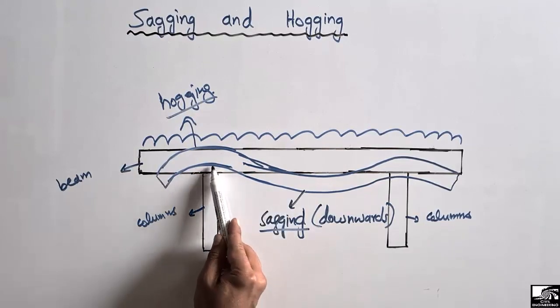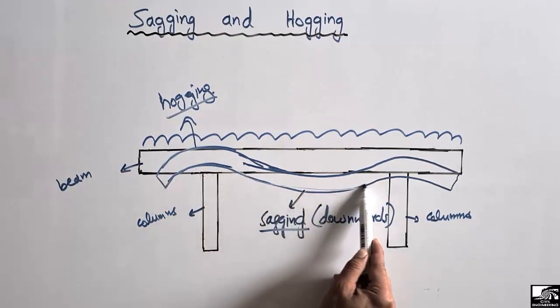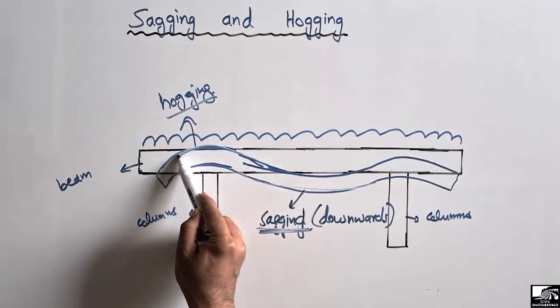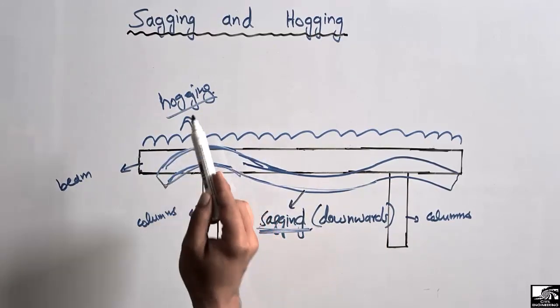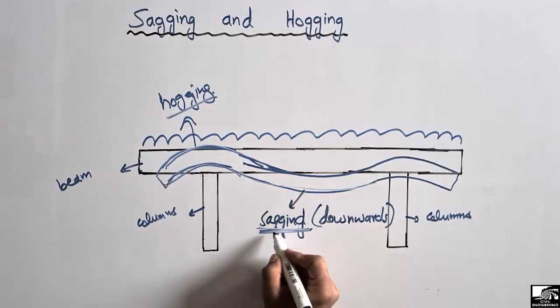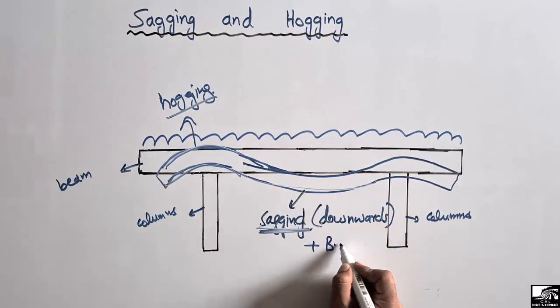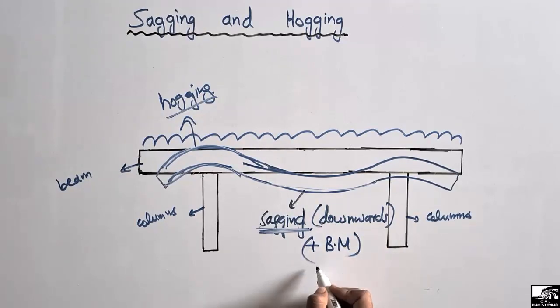The main difference is that when the beam bends in downward position, it is called sagging of the beam, while when it bends in the upper direction, it is called hogging of the beam. Or we can say when the beam shows positive bending moment, it will be sagging.